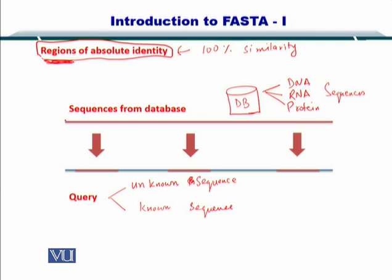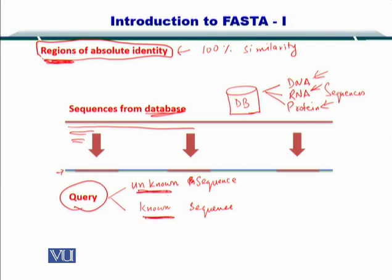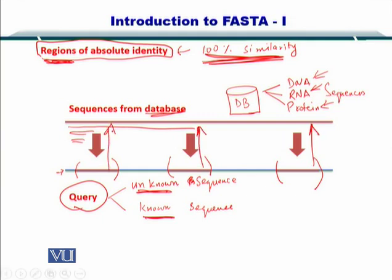To elaborate: here you have sequences from the database, which will contain several hundreds of thousands of sequences. These sequences can be from DNA, RNA, or proteins. And here in blue, if you have the query sequence — which may be an unknown or known sequence — you can find these regions of 100% similar composition with the database. FASTA finds these regions and employs them in pairwise alignment later.